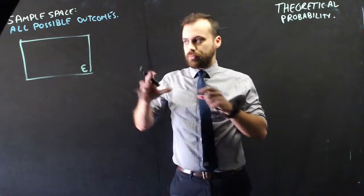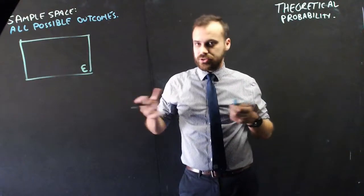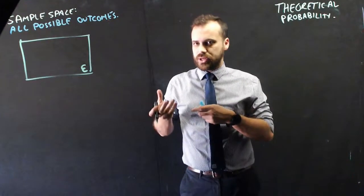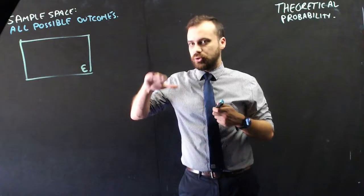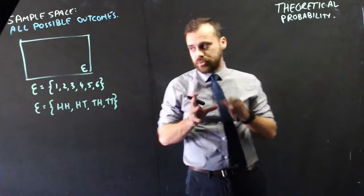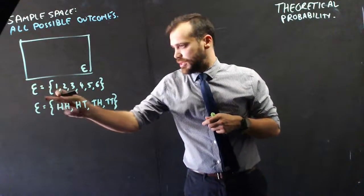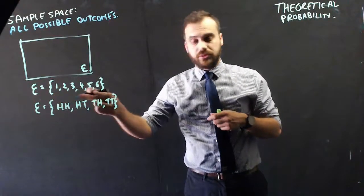It's all of the possible things that can happen, it's all the students in the classroom, it's all of the numbers on a dice, it's all of the sides of a coin, heads or tails. So depending on the thing you might be interested in, the universal set might be all of the numbers on the dice, 1, 2, 3, 4, 5, 6.